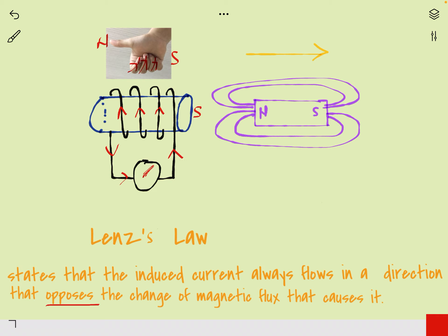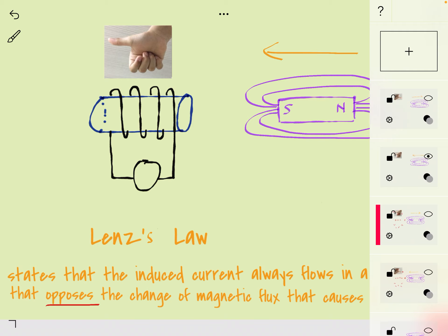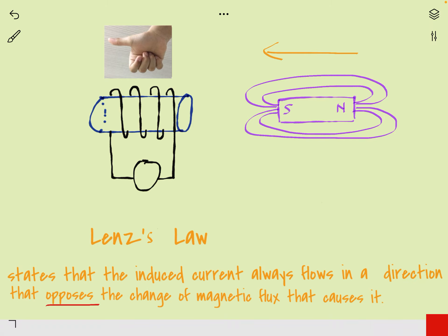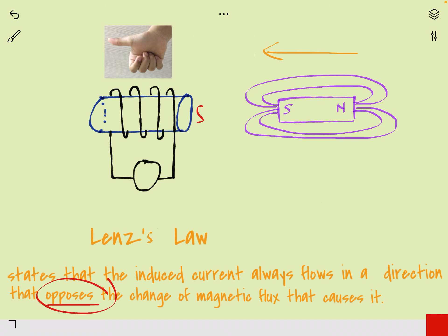You can also change the orientation of the bar magnet — in this case I have changed it so that south is on the near side. When you bring this south pole close to the solenoid, this end of the solenoid will also become south, because like poles repel and it tries to oppose the motion. So when this end is south, current flows upward on the near side of the solenoid and the galvanometer is deflected accordingly.